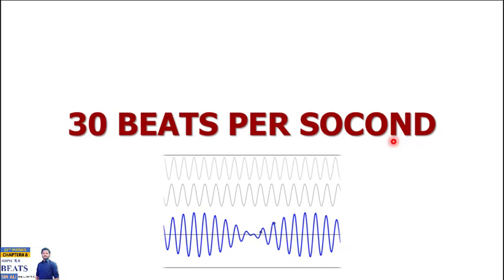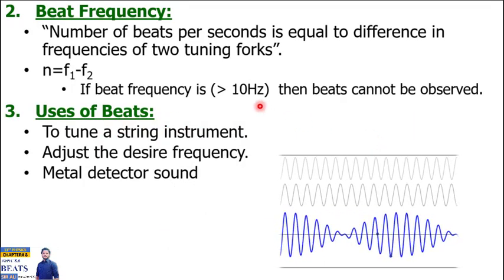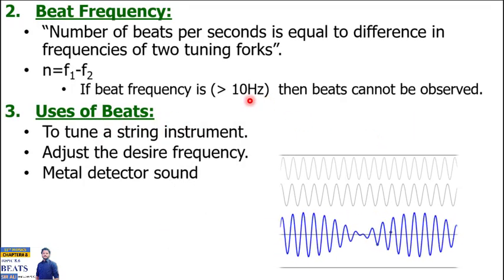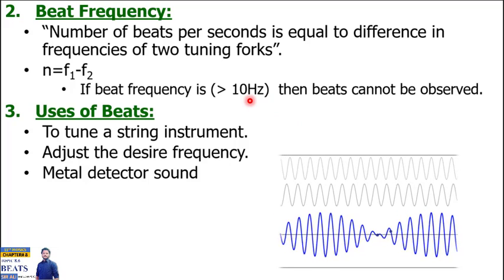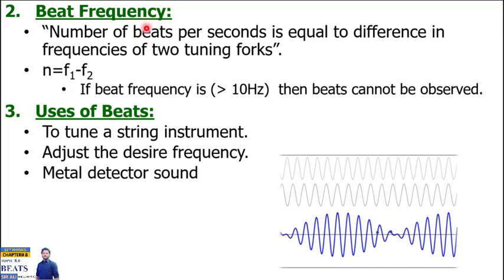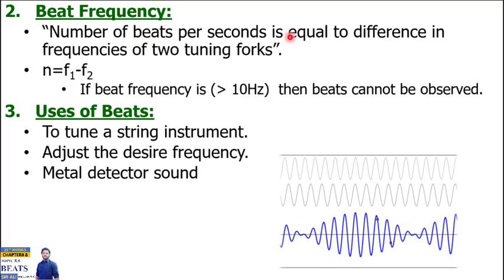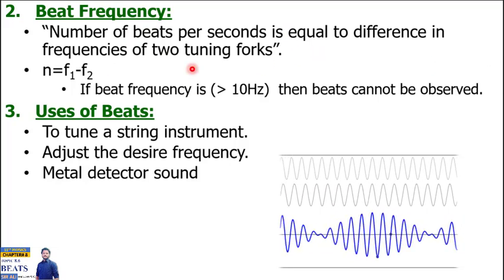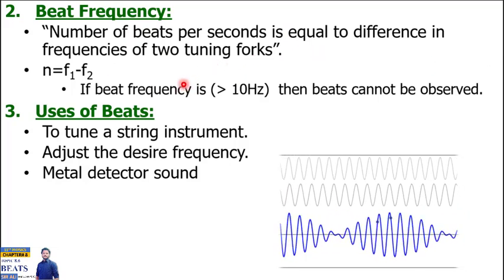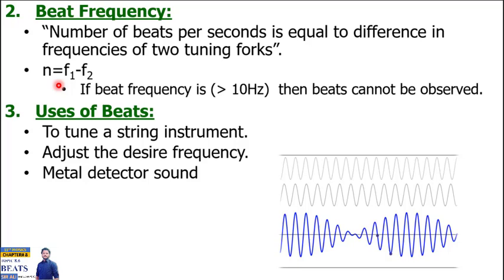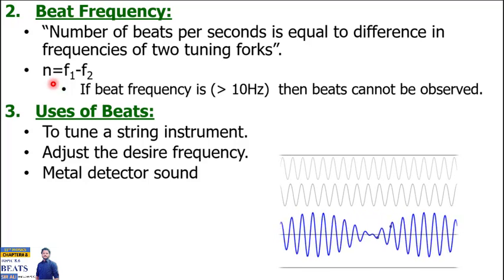If the difference of frequencies is greater than 10 hertz, then beats are difficult to recognize. Now, how many beats per second is equal to the difference in the frequencies of the two tuning forks - 2 hertz, 4 hertz, and so on.